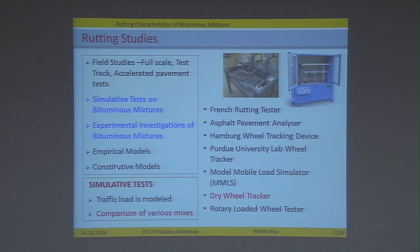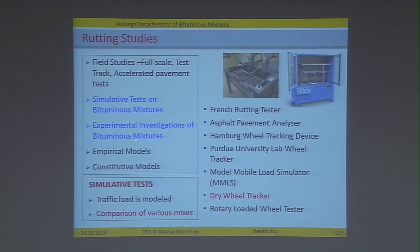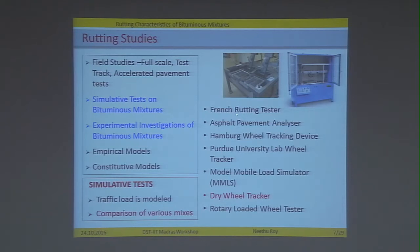In this particular project, what we have looked at is the simulative test on bituminous mixtures to find the performance of different types of binders, and also an experimental investigation to see whether the rutting process can be captured. The simulative test is actually a torture test — we simulate the traffic load on a slab or specimen of the mixture to find a comparison between various mixes. Different rut wheel testers are available such as the French rutting tester and asphalt pavement analyzer; the one available at IIT Madras is the dry wheel tracker.